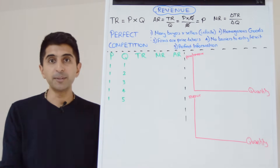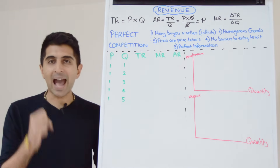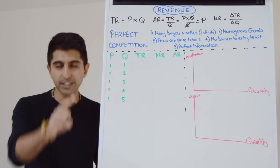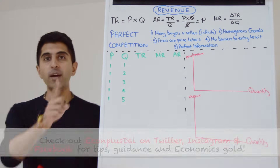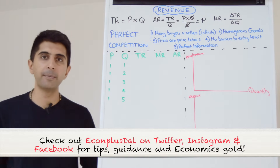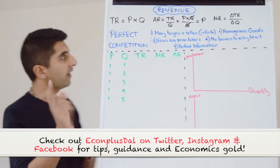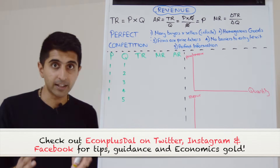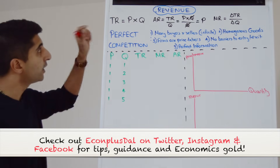Hi everybody! Having covered both short-run and long-run costs, let's dive straight into revenue. Revenue is just the money made from sales by a business, and therefore we can look at these core equations and understand them very clearly.